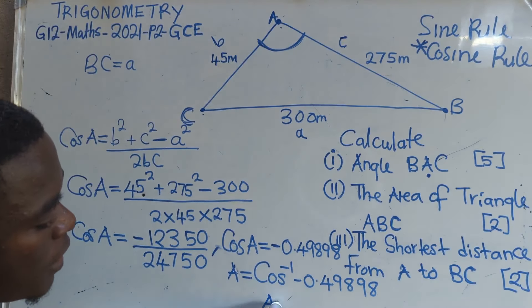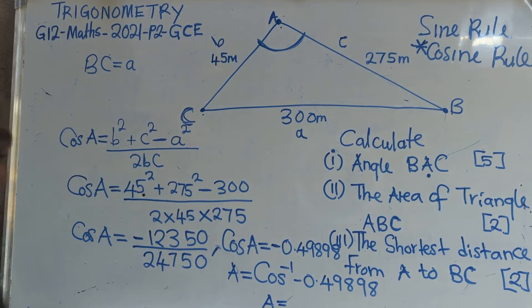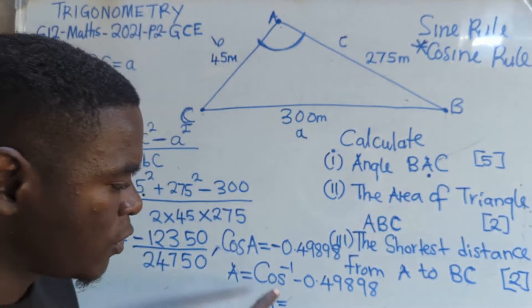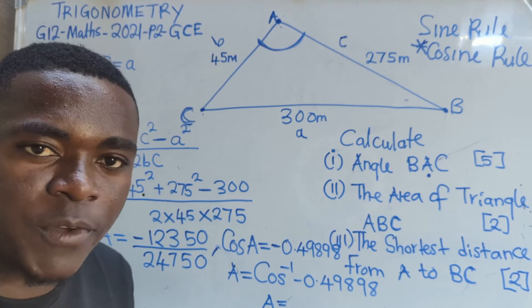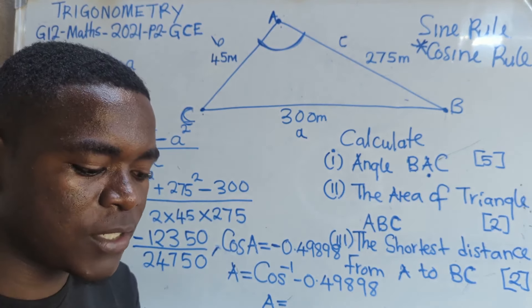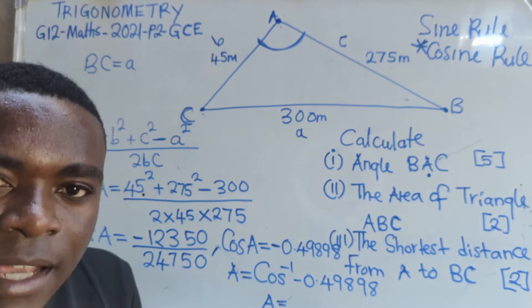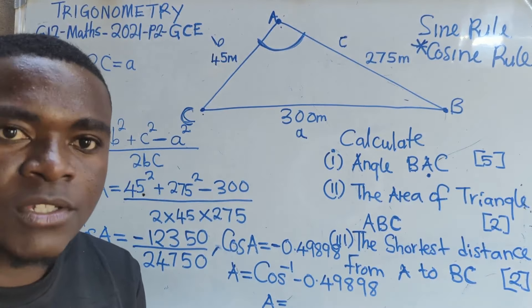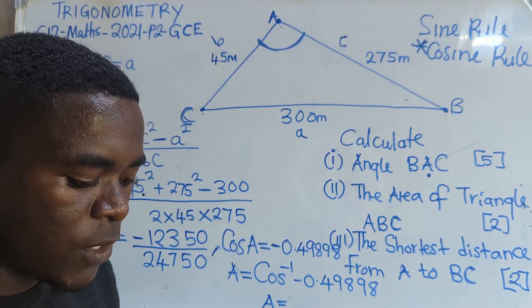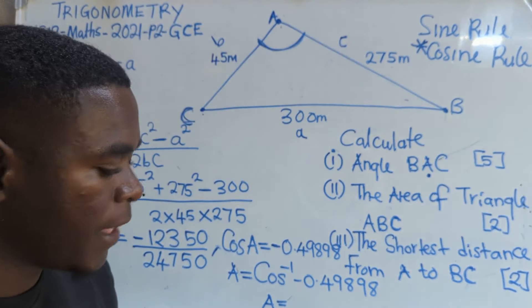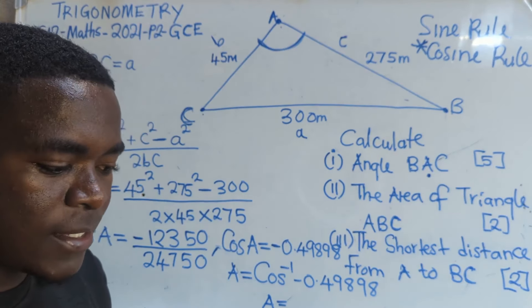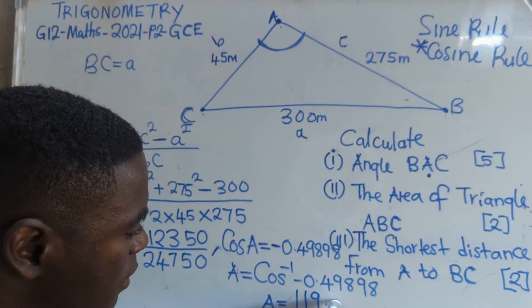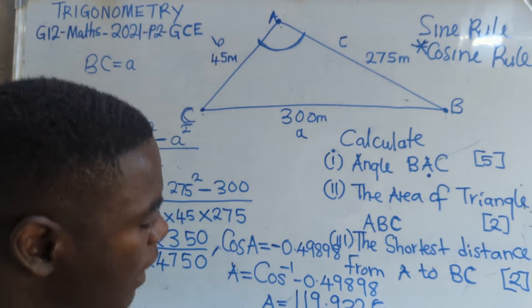Where you are going to say now, A is therefore equal to. On your calculator, how do you punch this? You just say cos — you want to find the inverse. Press shift — it depends on the kind of calculator you are using. On other calculators it's second function. Then you go to cos. The negative has appeared. So after seeing this negative, you say negative 0.4989. The answer that we are getting is 119.9325 degrees.